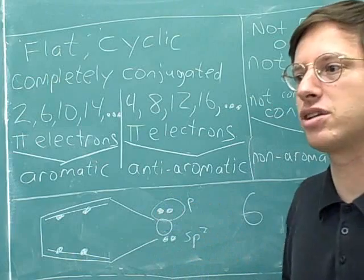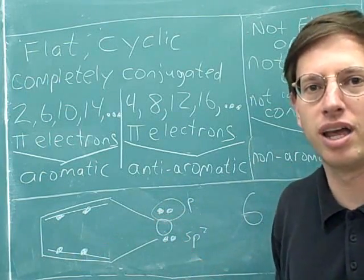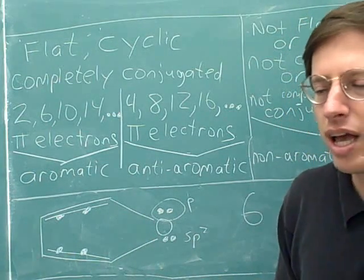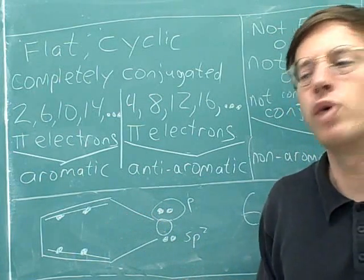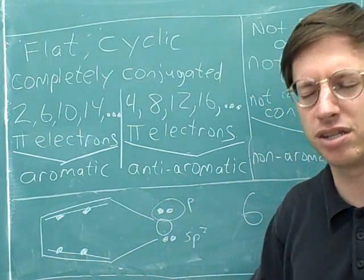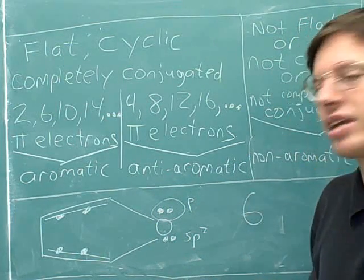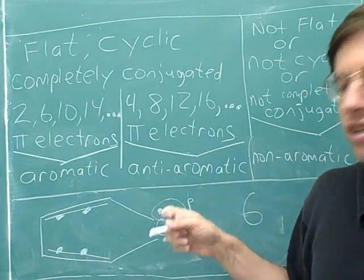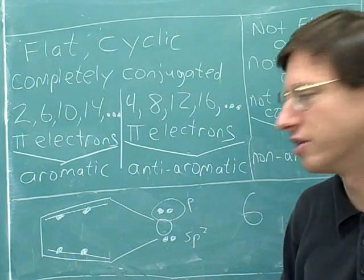So now we've finally gotten to the point where we're doing some of the hard questions that give a lot of students trouble on homework and on exams. Most students tend to get a question like this wrong, and you can see now what the reason is. People tend to get this wrong because they don't know how to tell which lone pairs count as pi electrons. All the work that we've done so far has gotten us to this point where now we can finally figure out which of the lone pairs count as pi electrons.